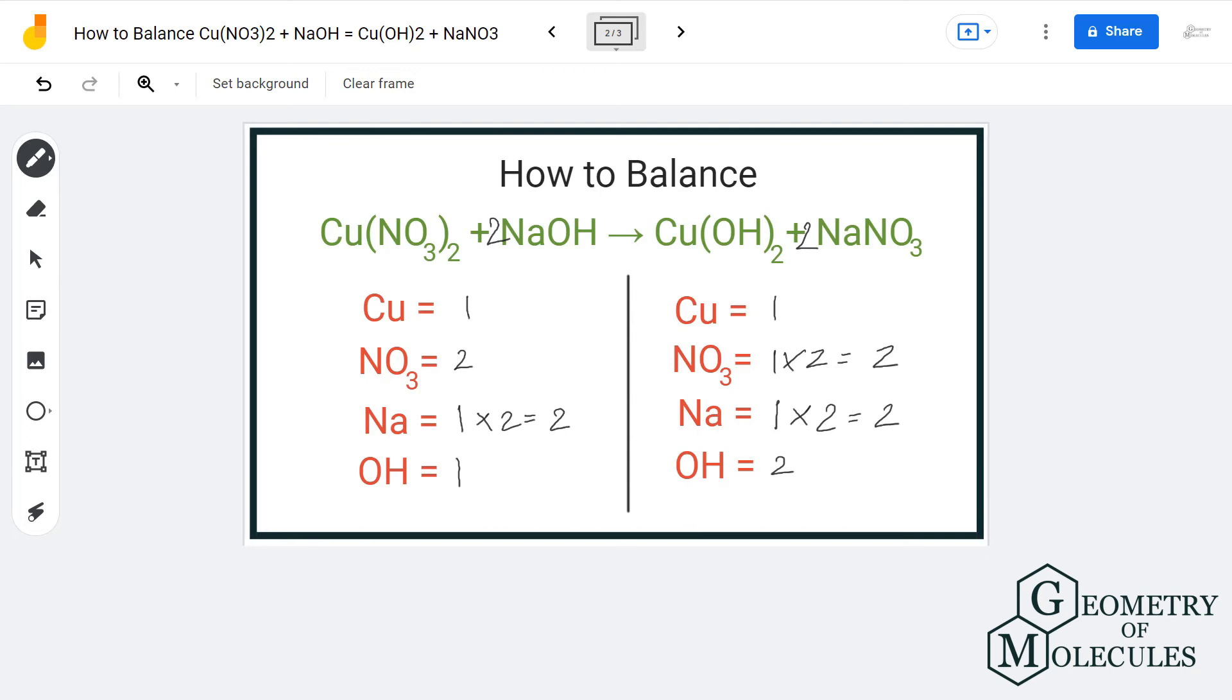Once you add a coefficient 2 here, we have two sodium atoms on both reactant and product sides and two OH groups on both these sides. Now this equation is balanced. I hope this video helps you to know how we can balance such a tricky equation.